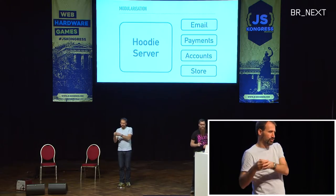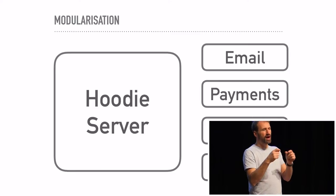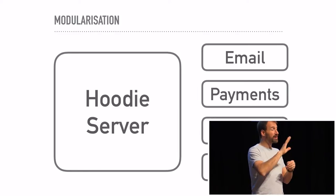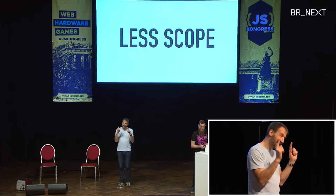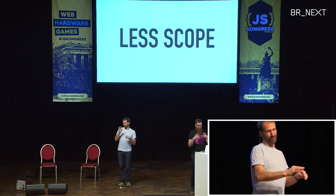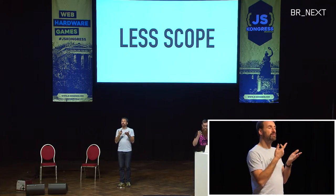We immediately started seeing the benefits of smaller, well-defined modules. It was easier for people to get started contributing a new feature. Somebody did "Password Forget" for accounts, and all they had to do was learn the internals of the accounts module and the API of the email module — nothing about the store, nothing about payments, nothing about the overall architecture of Hoodie server. The meta thing here is less scope. More scope is the death of all software; less scope is the life of all software. Smaller, distinct pieces of functionality are easier to understand, easier to reason about, easier to keep in your head.